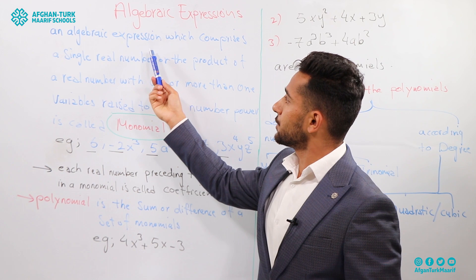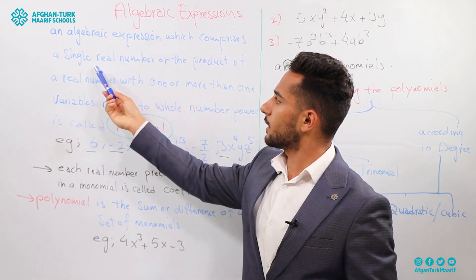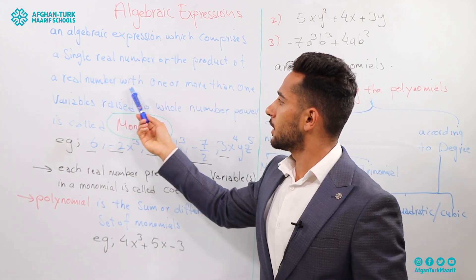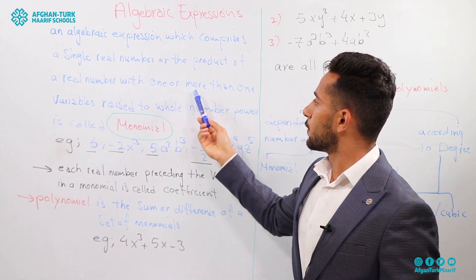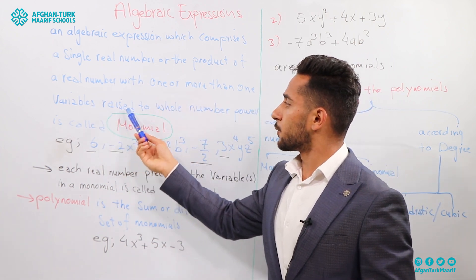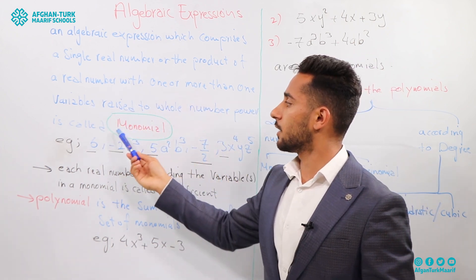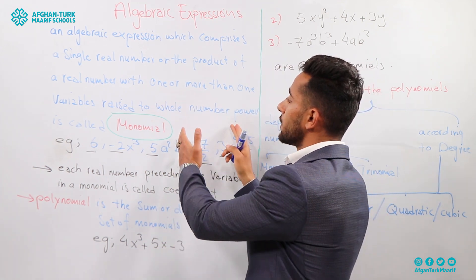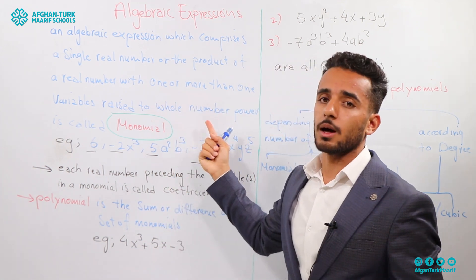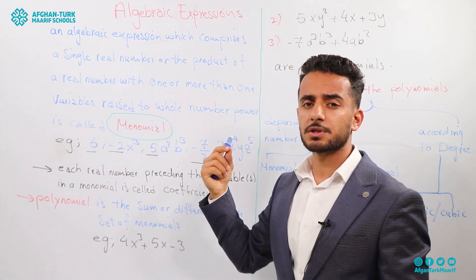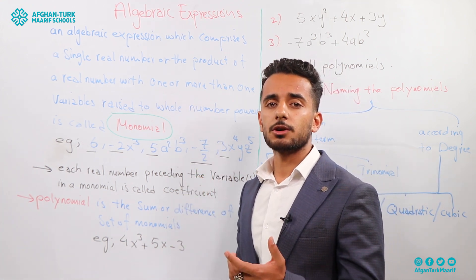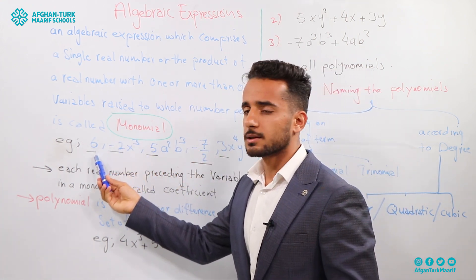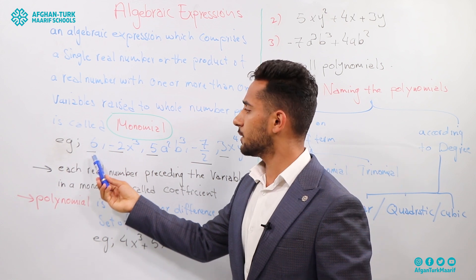An algebraic expression which comprises a single real number, or the product of a real number with one or more variables raised to a whole number power, is called a monomial. Pay attention — the power should be a whole number, which starts from 0. For example, 6 is a monomial.